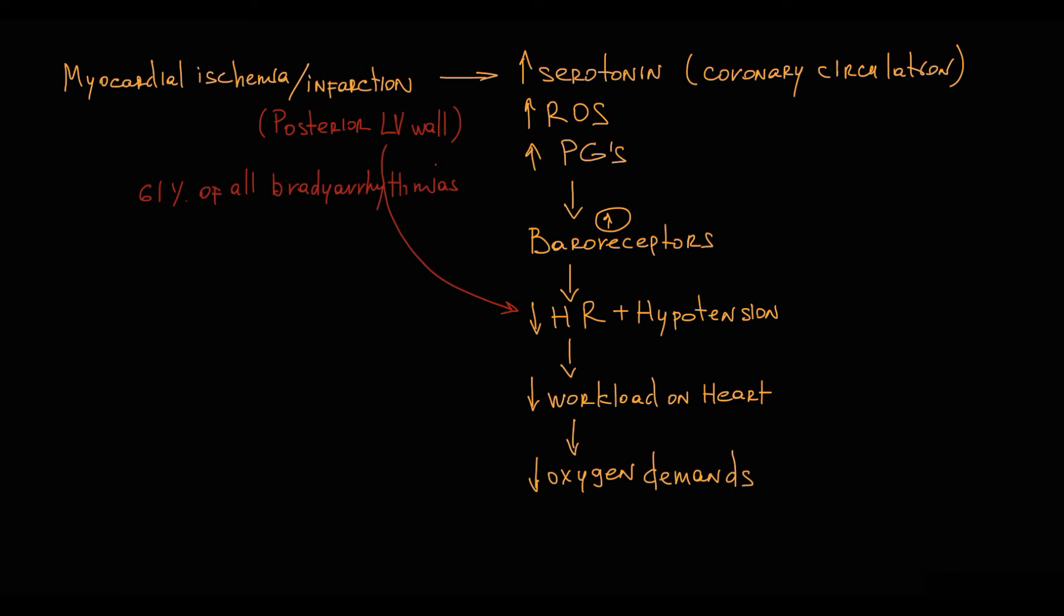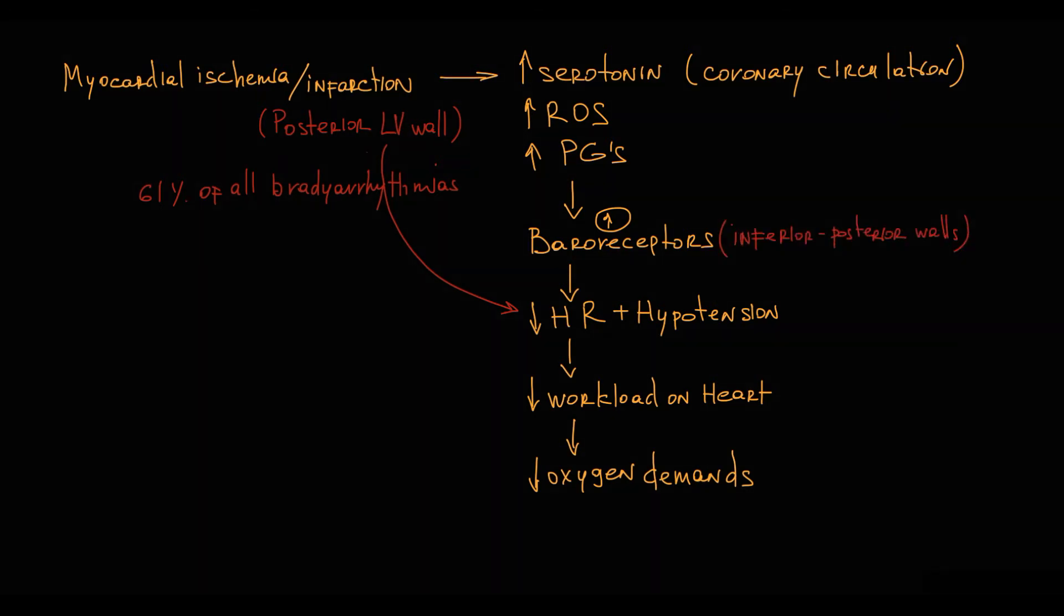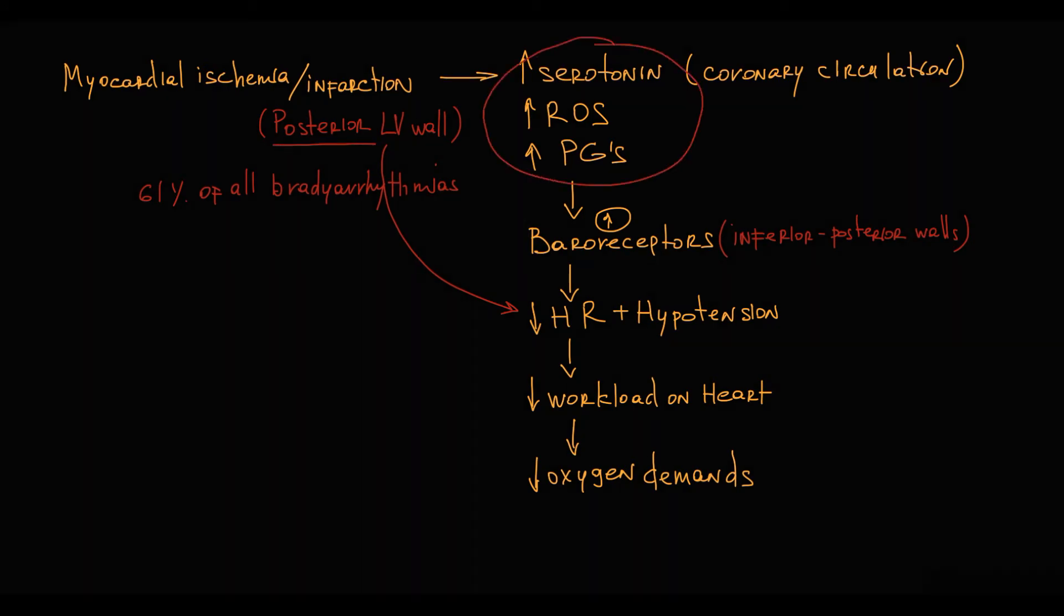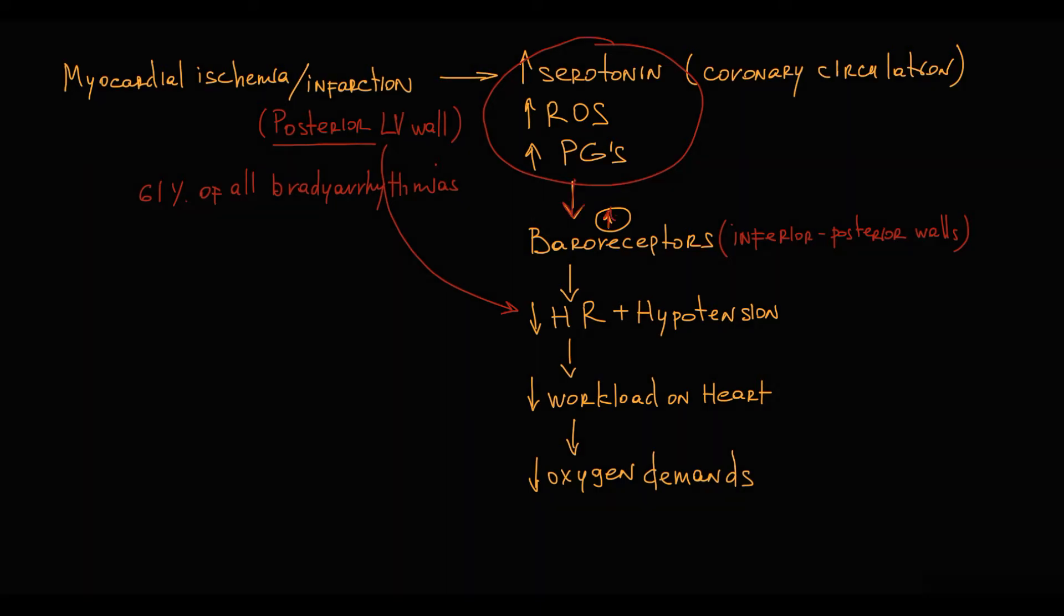And it's explained by left ventricular baroreceptors localization and activation of Bezold-Jarisch reflex. Recall that left ventricular baroreceptors localize preferentially in the inferior posterior walls of the heart. And when infarction of the posterior wall occurs, it causes massive release of ischemic substances right near baroreceptors. So with posterior myocardial infarction, there is maximal concentration of ischemic substances near baroreceptors and it causes strong chemical stimulation.